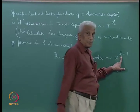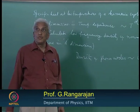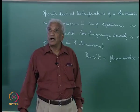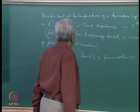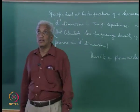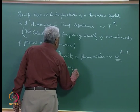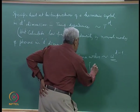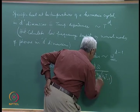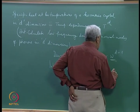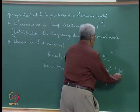For example, if d = 3 (three-dimensional), the density of phonon modes goes as ω^2. If it is one-dimensional, it does not depend on ω at all — it is ω^0. So in general, the density of phonon modes goes as ω^(d−1). Therefore, the internal energy U is the integral of (ℏω)/(e^{ℏω/k_BT} − 1) times ω^(d−1) dω.